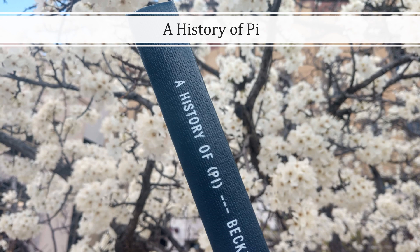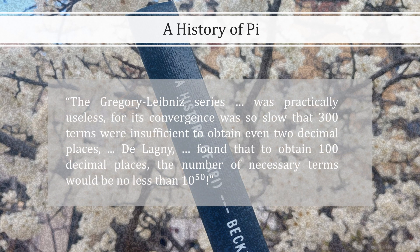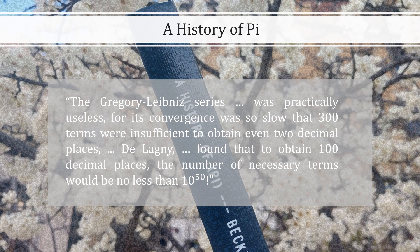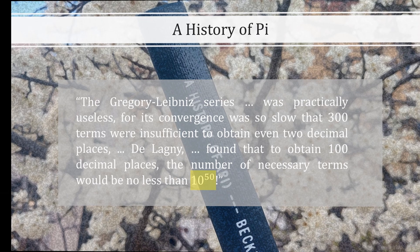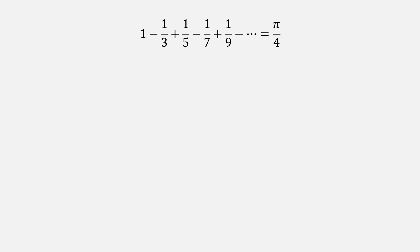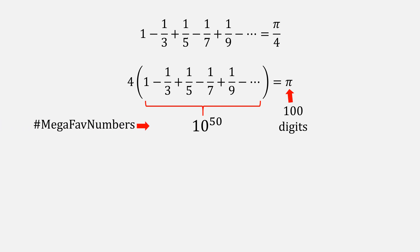In A History of Pi by Peter Beckman, he writes that it converges so slowly that Delaney showed that it needs 10 to the 50 terms in order to get 100 decimal places of pi. In essence, this series, which we can write as 4 times that summation, for 100 decimal digits of pi, needs 10 to the 50 terms. Hashtag Mega Favorite Numbers.